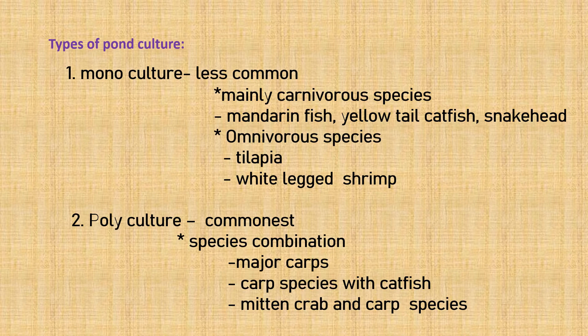There are two types of pond culture: monoculture and polyculture. Monoculture is less common in fish farming. It mainly involves carnivorous species like mandarin fish, yellow-tailed catfish, and snakehead, as well as omnivorous species like tilapia and white-legged shrimp. Carnivorous species are aquatic animals that eat meat, while omnivorous species eat both meat and other food.